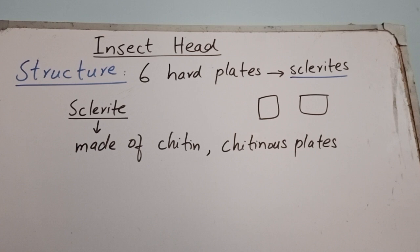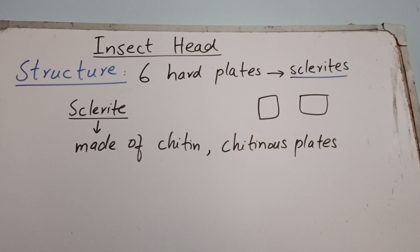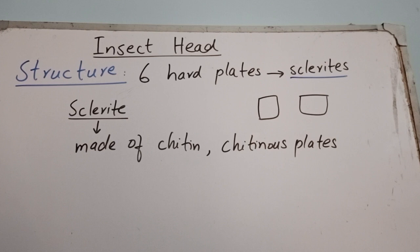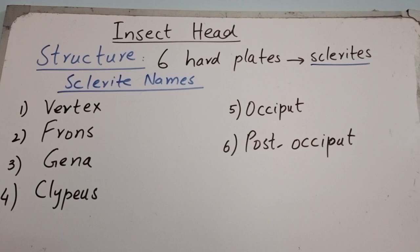The insect head is made up of six hard plates known as sclerites. These sclerites are either triangular or rectangular in shape, and each sclerite is basically made up of chitin. Chitin is a carbohydrate — it is a polysaccharide. So the insect head is made up of six chitinous plates known as sclerites, and we can say that the insect head is a highly sclerotized structure.